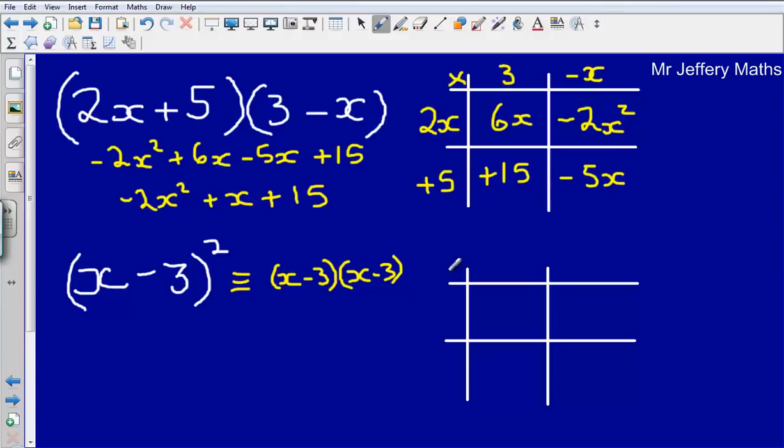So again, putting this into our grid, we've got x and minus 3, and x and minus 3. x multiplied by x gives us x squared, x multiplied by minus 3 gives us minus 3x, x multiplied by minus 3 gives us minus 3x, and then minus 3 multiplied by minus 3 gives us plus 9.